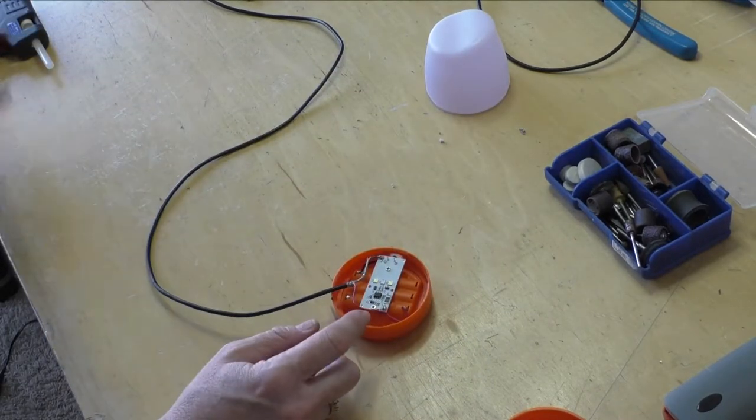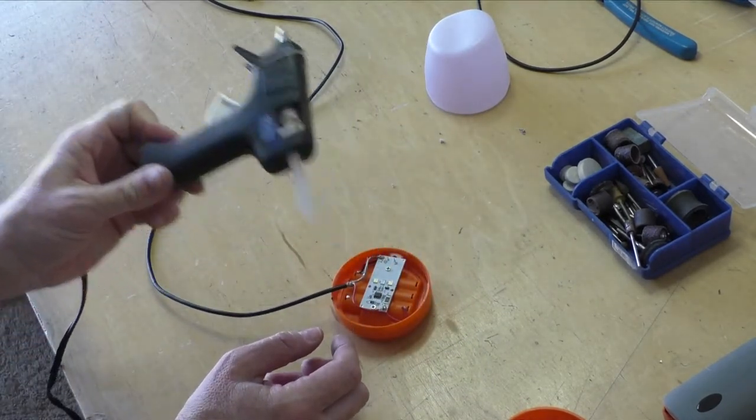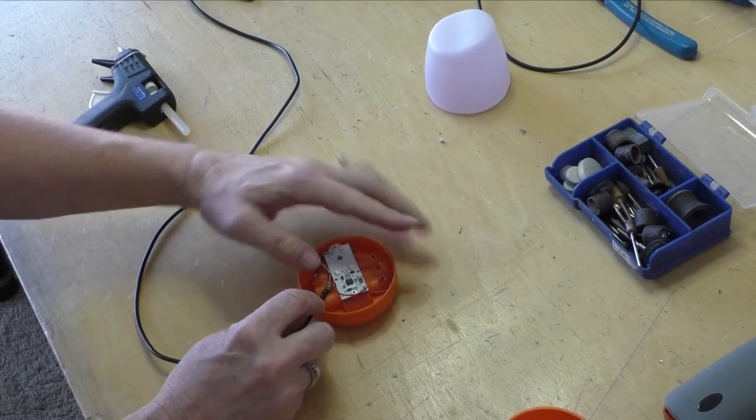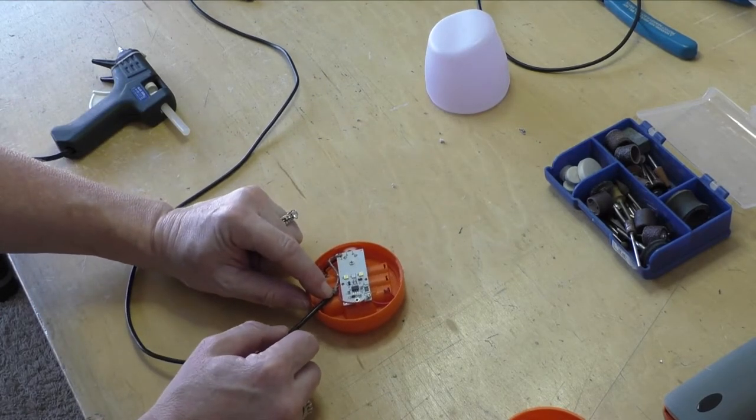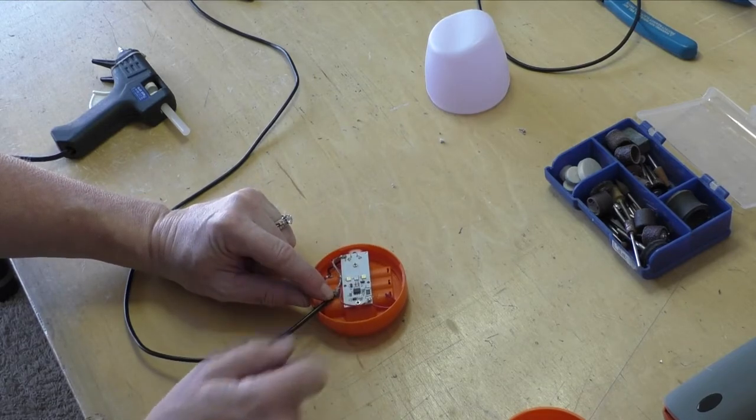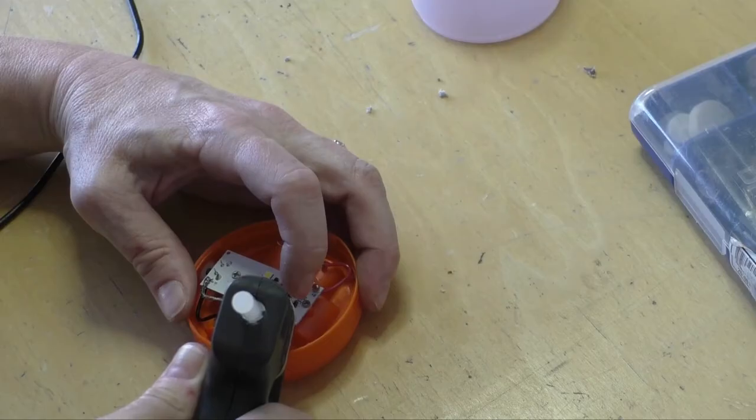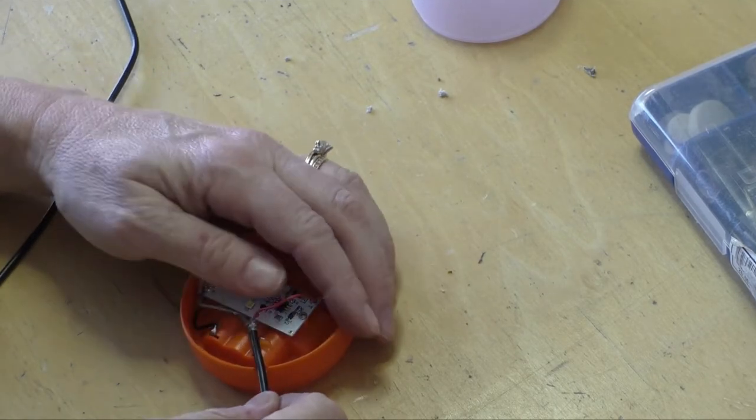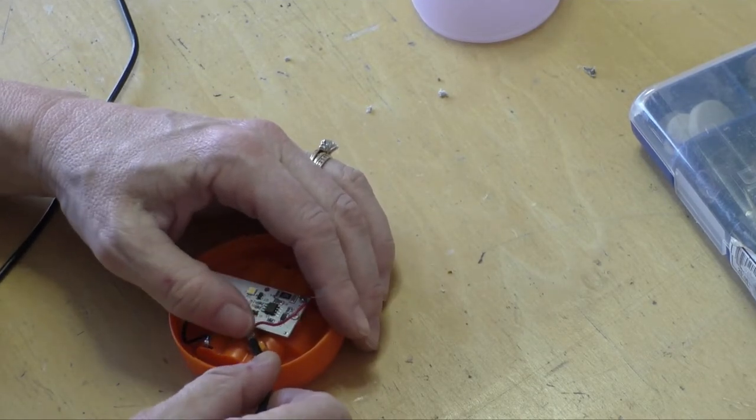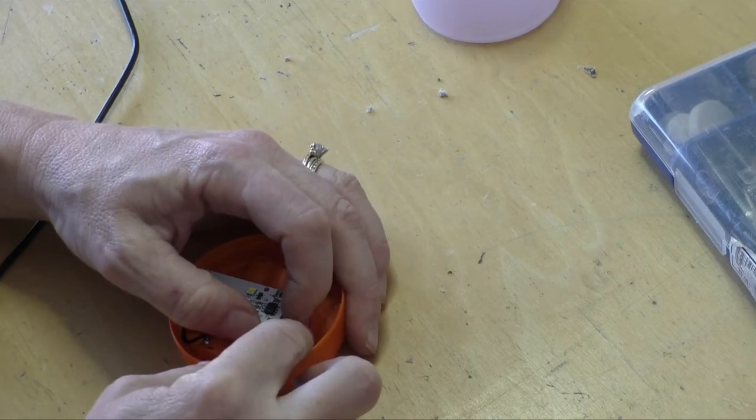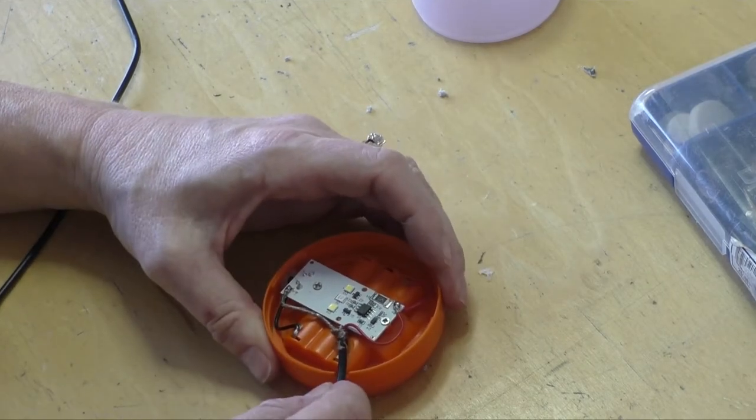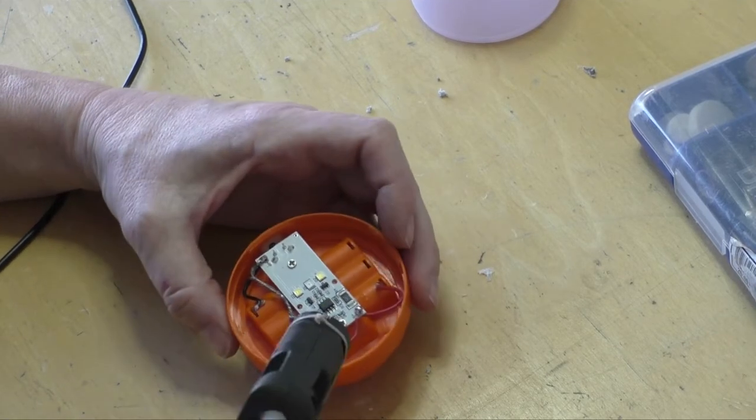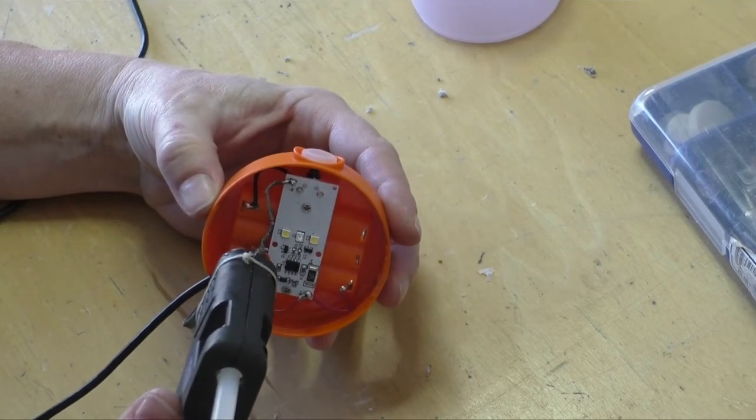Now I'm going to take a little bit of hot glue and glue the cable in place inside here to reduce the strain on the solder joints. Gop of that. Stick that in there. There. That's pretty stable. Put a little more around it just for good measure.